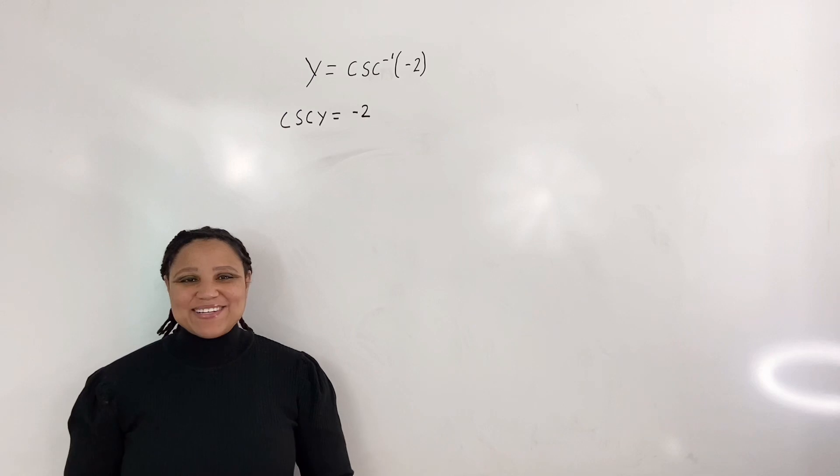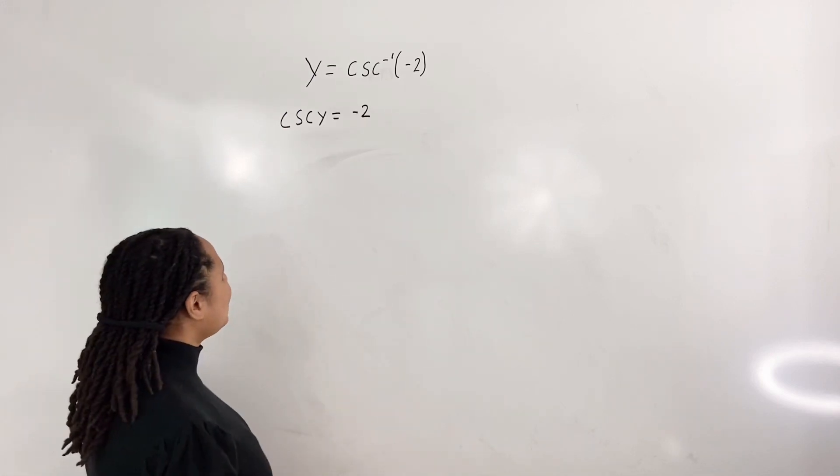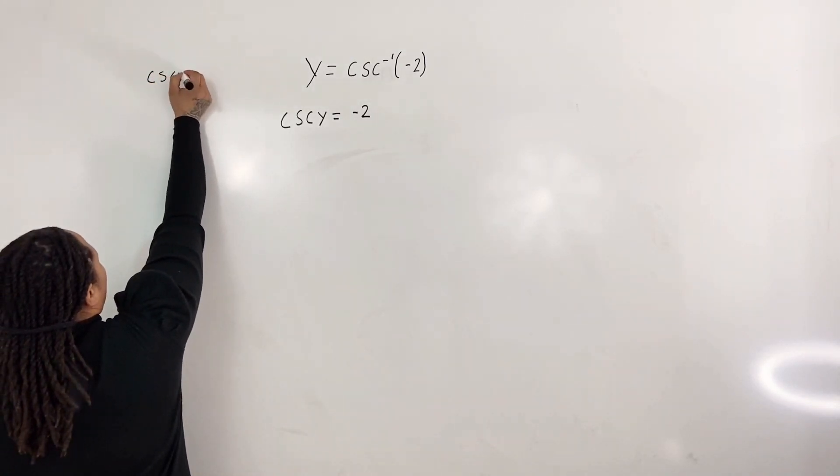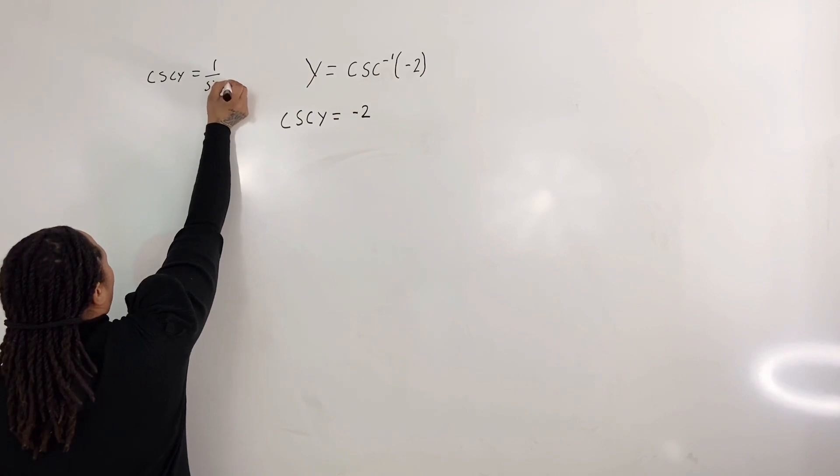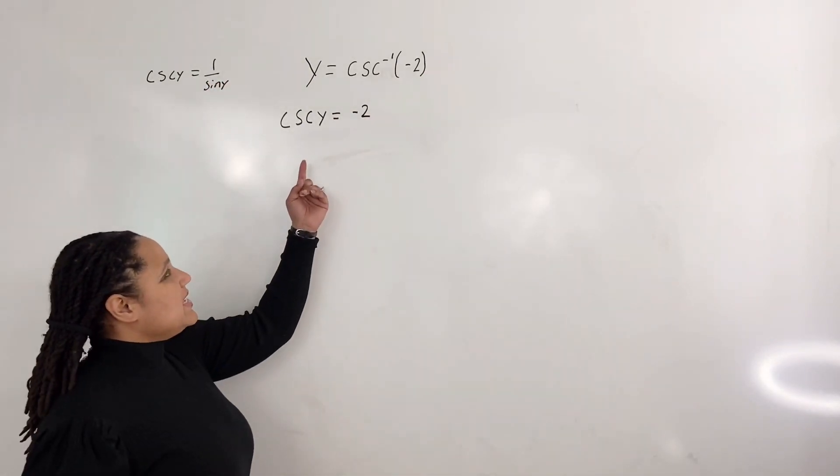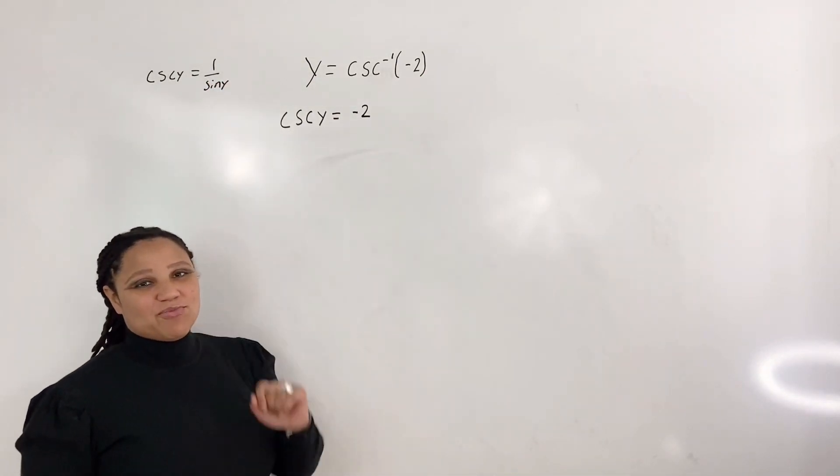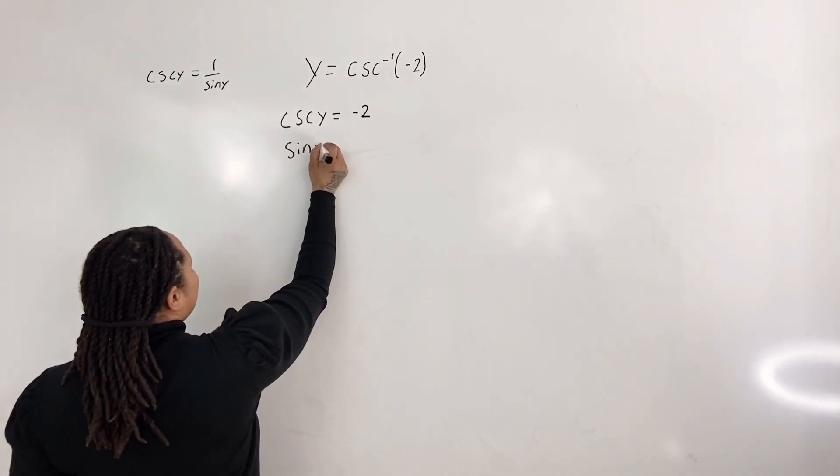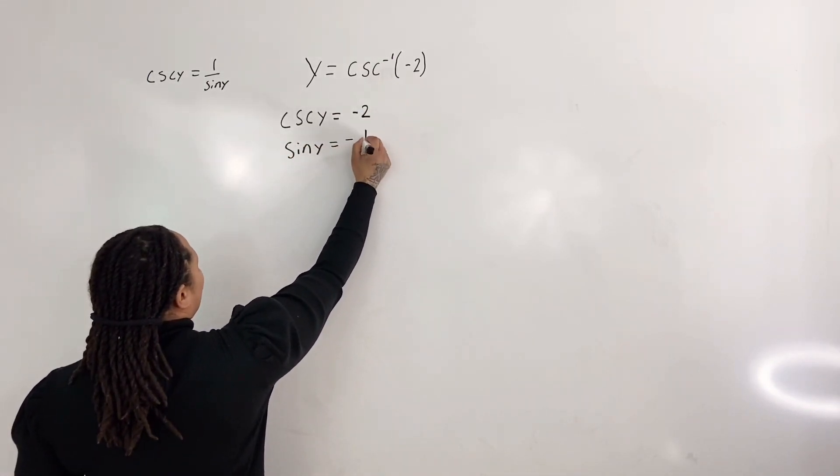Now we know that cosecant y is the same as 1 over sine y. So if I write that out to the side, we know that csc y is equal to 1 over sine y. So all we have to do is take the reciprocal of the right-hand side and say sine of y is equal to negative 1 half.